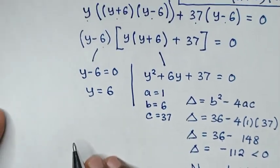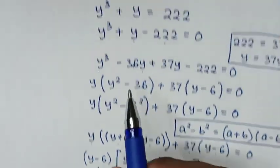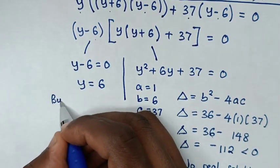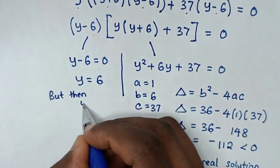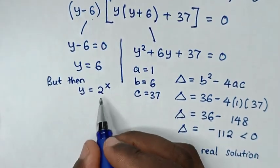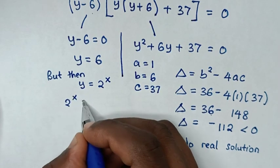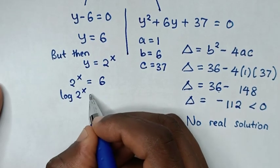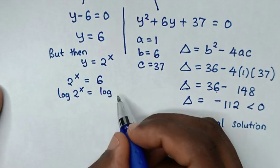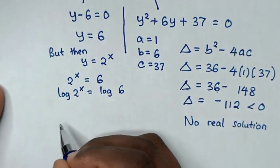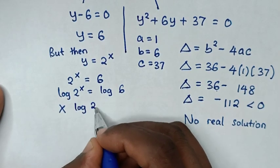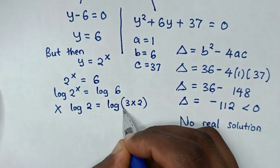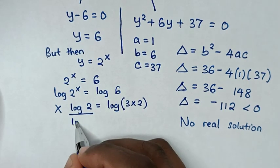So we continue with the first solution where y = 6. Since we let y = 2^x, we have 2^x = 6. To find x, we apply log to both sides: log(2^x) = log(6). The power x moves down so x·log(2) = log(6), and since 6 = 3 × 2, we write x·log(2) = log(3 × 2).